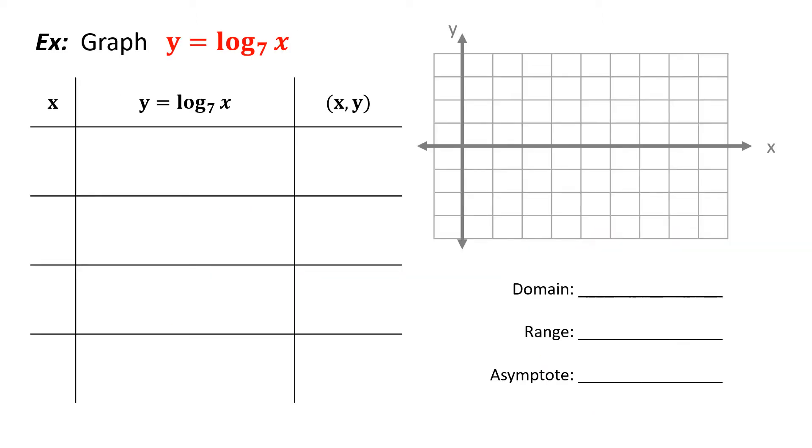Let's graph a log function: y equals log base 7 of x. We have to pick the x values, and if we pick wisely it makes it much easier. For the first one, one's usually a good choice. We would have y equals log base 7 of 1, so we're going to figure out 7 to what power equals 1. And the answer is 0.